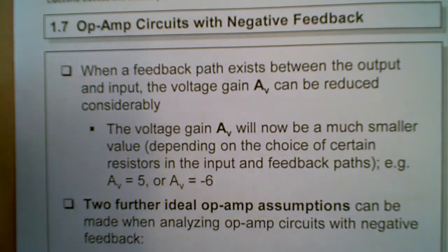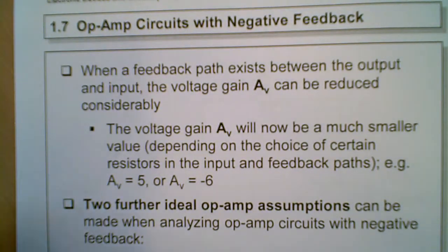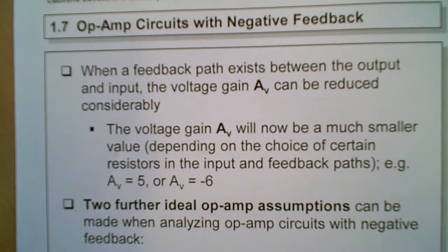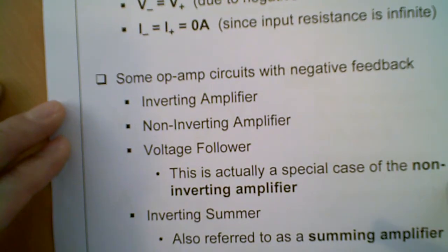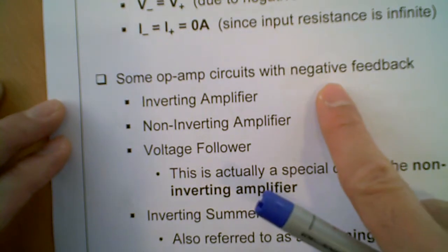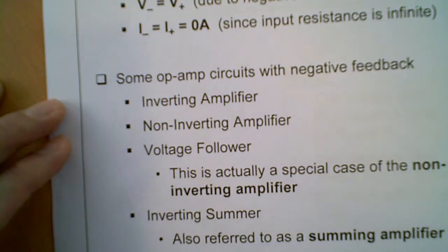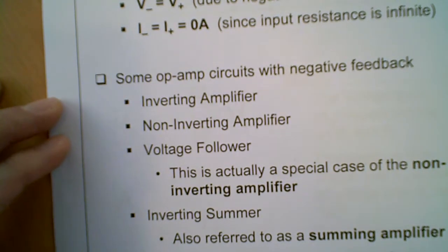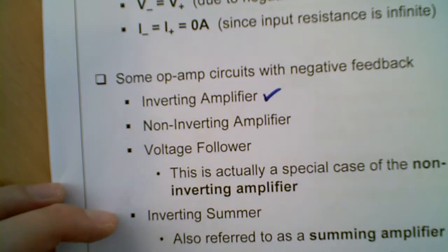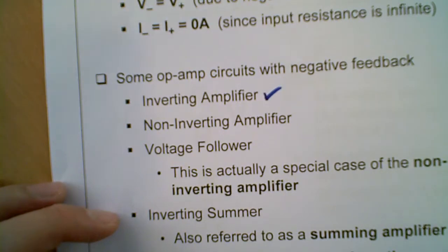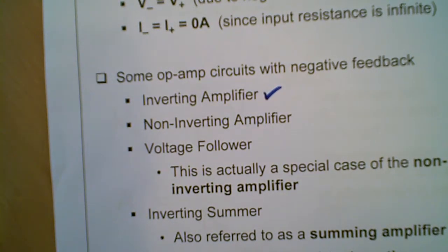Now, to begin with, let me explain what we mean. There are different types of operational amplifier circuit with what we call negative feedback. So I will just start with this one here, the one with the inverting amplifier and how it works.